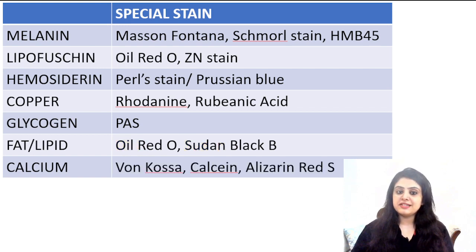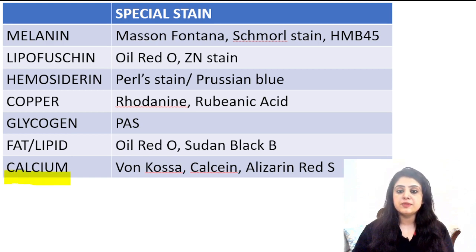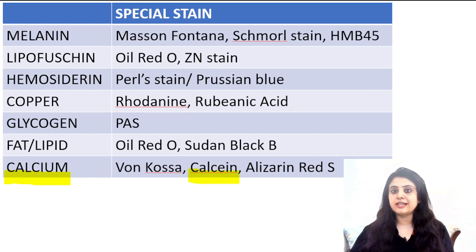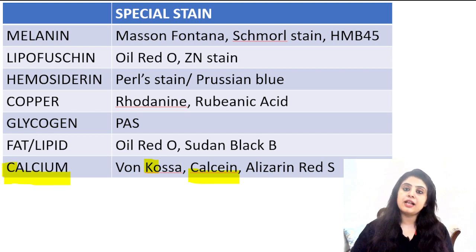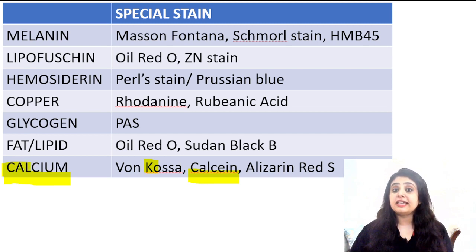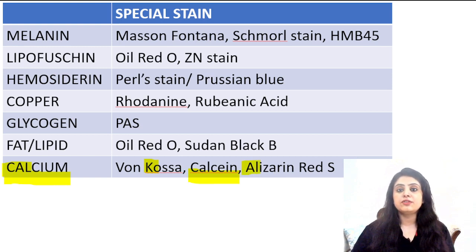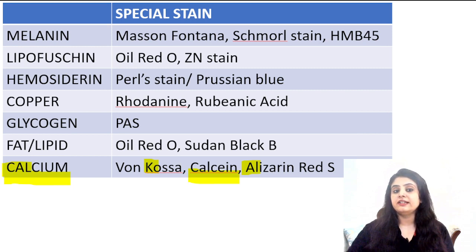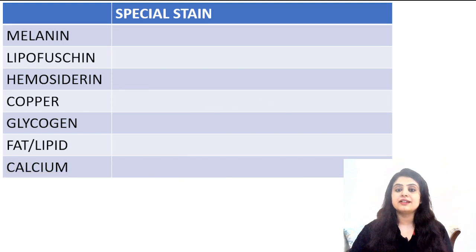Coming to the last one of this table and that is calcium — a very interesting way of learning. Look at the way you learn calcium: the stain that can definitely be asked is calcein — sounds similar, calcium, calcein. Next, the way you pronounce calcium has a K sound, so von Kossa — von Kossa also has a K sound. And the next two letters A-L mean alizarin red S. So: calcein, von Kossa, and alizarin red S — my entire table is complete.